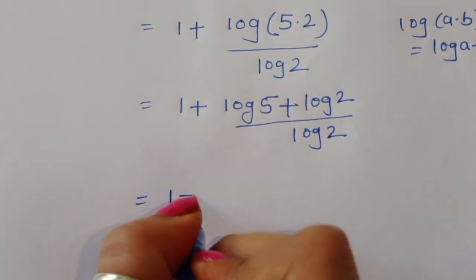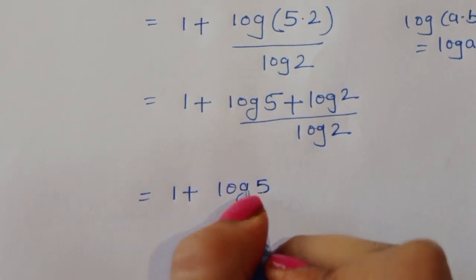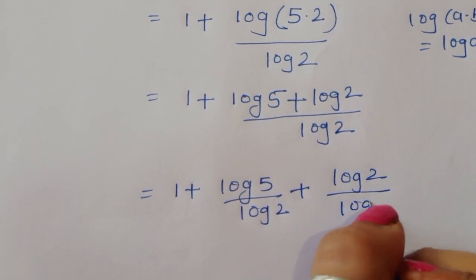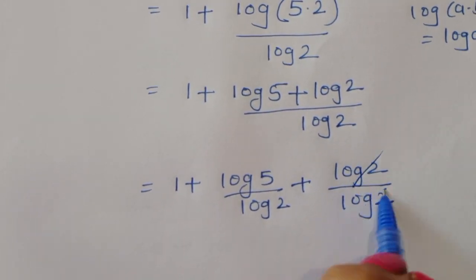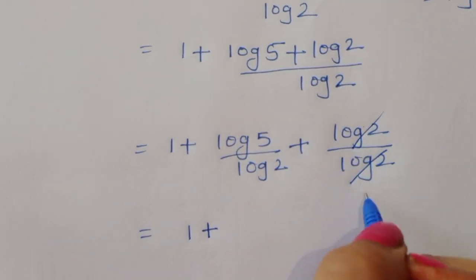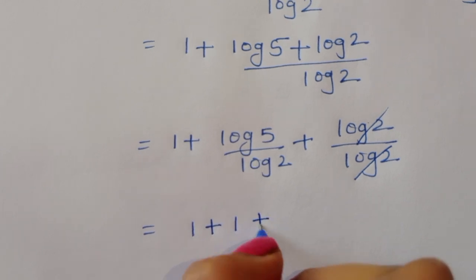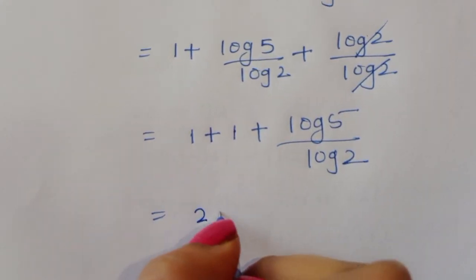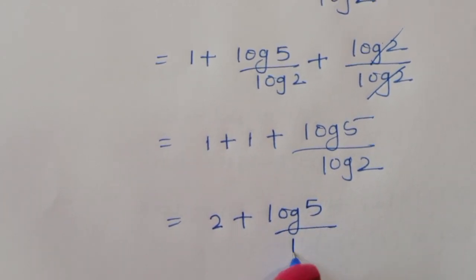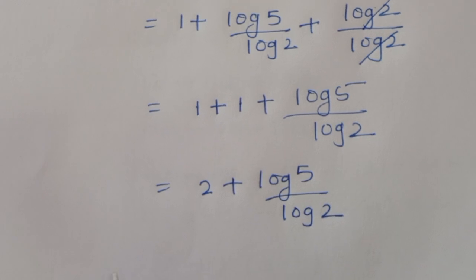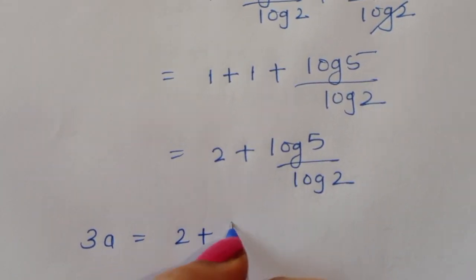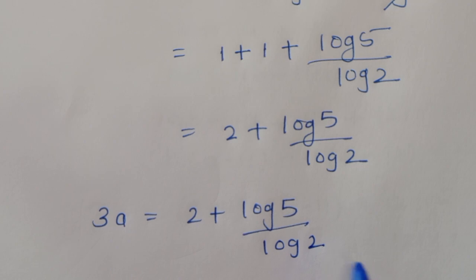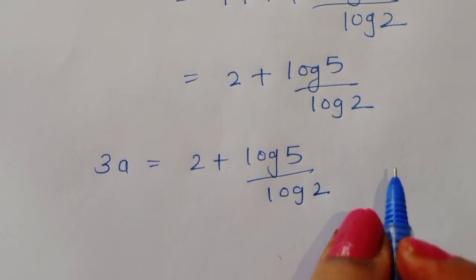This becomes 1 plus log of 5 divided by log of 2, plus log of 2 divided by log of 2. The log of 2 over log of 2 cancels to give 1, so we get 1 plus 1 plus log of 5 divided by log of 2, which gives us 3a is equal to 2 plus log of 5 divided by log of 2.